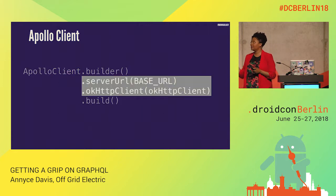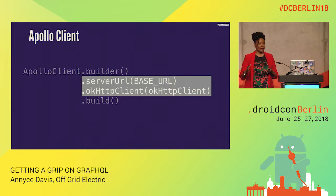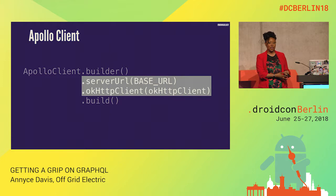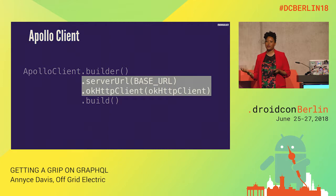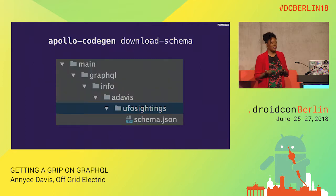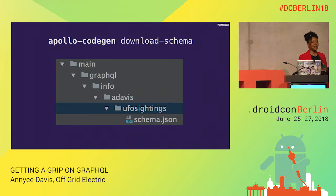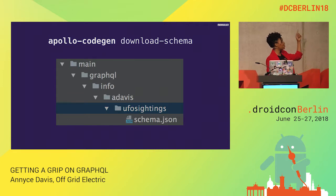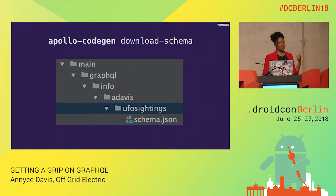The Apollo client requires two key things: your server URL and your OKHttp client. This code looks very similar to Retrofit — it modeled itself after Retrofit, which makes it really easy to bring into your Android projects. The next piece you need is the schema. You can use the Apollo codegen command line tool to download your schema — it stores it in a JSON file that you place inside your project. It uses introspection to grab every single thing about your GraphQL schema so your client knows how to work with it.